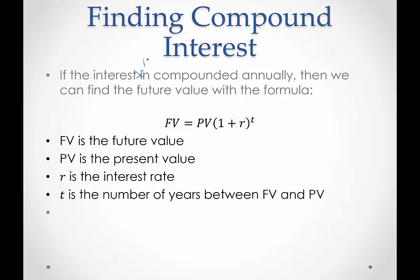If the interest is compounded annually, then we can find the future value with the formula. Future value equals present value or principal, times 1 plus r raised to the power of t. Keep in mind we need to follow order of operations. So order of operations dictates to us that we're going to add first. Then we're going to do this power. The last thing we do is multiply by that present value. So we have to keep that order in mind. If you don't do this in the correct order, bad things are going to happen. You're going to end up with a crazy interest or future value. So r is the interest rate and t is the number of years between the future value and present value.